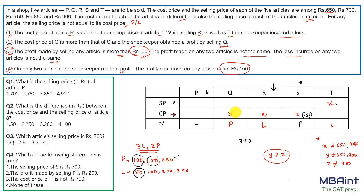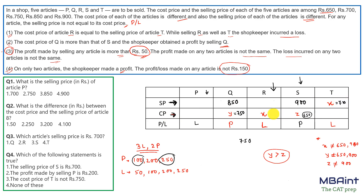Therefore y must equal 750. With y = 750 making a profit, possible profits are 100, 200, or 250. A profit of 200 would mean SP(Q) = 950, which exceeds our numbers, so profit(Q) = 100 and SP(Q) = 850. For article S (CP = 650) making a profit, SP(S) = 900 giving profit(S) = 250 — that value is now taken. The only remaining value for x (CP of R) is 700, since 850 and 900 are taken in that row and 750 and 650 are taken in the cost price column.